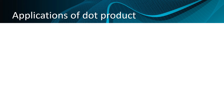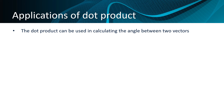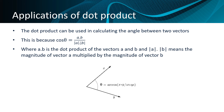The dot product can be used in calculating the angle between two vectors. This is because the cosine of the angle is equal to the dot product of the two vectors, divided by the magnitude of the first vector multiplied by the magnitude of the second vector. You don't actually need to know how to calculate this, just to be aware that this is one of the applications we can use the dot product for.